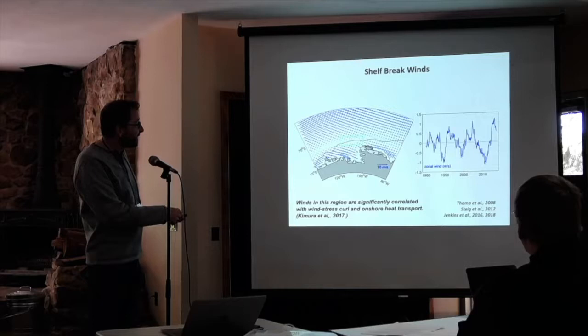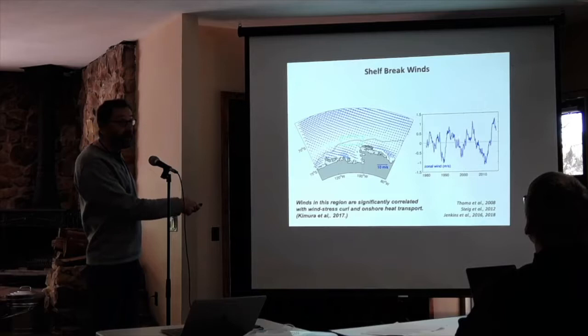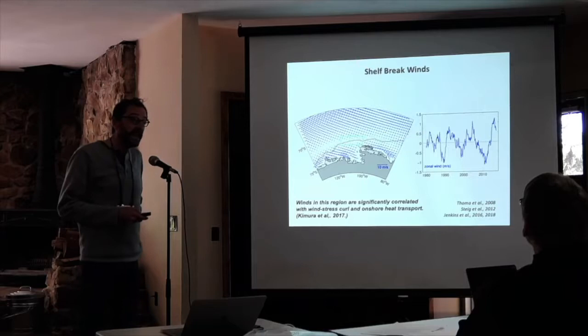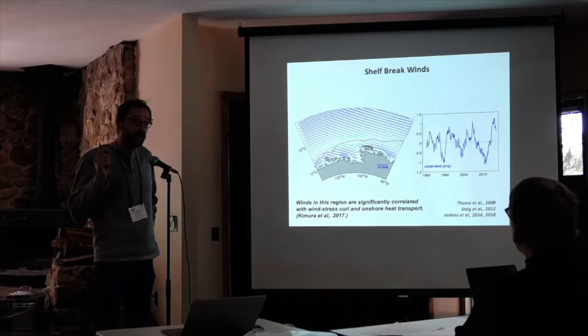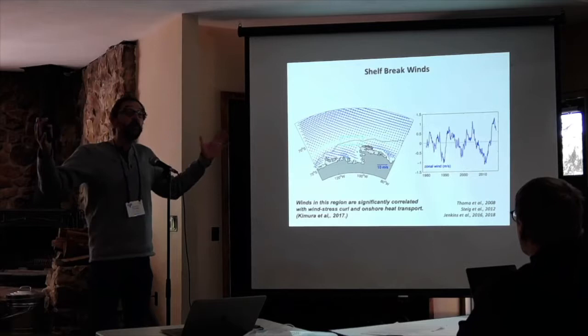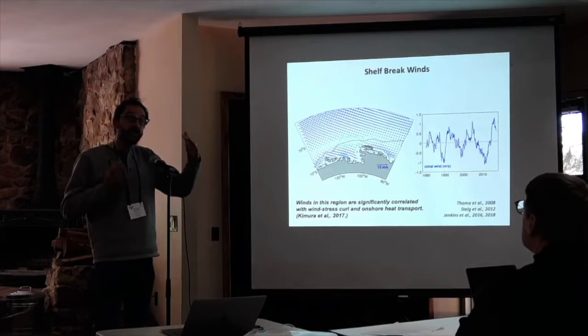The winds in this region are significantly correlated in models with the onshore heat transport and in observations, which are few and far between. From 1979 to 2019, there's a lot of variability in this region — decadal variability absolutely dominates interannual to decadal variability. In fact, the correlation between the SAM and winds in this particular region is zero. There is no SAM influence on those timescales. The first principal component of the entire Antarctic domain is the SAM, but if you look just in West Antarctica, it is not the first principal component.